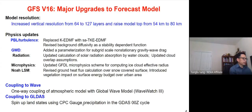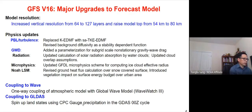Another major change is to use the Global Land Data Assimilation System to spin up the land surface in the initial condition, using observed precipitation to provide better initial conditions. The spin-up is run 72 hours before the forecast starts.